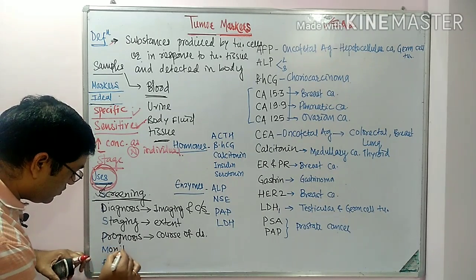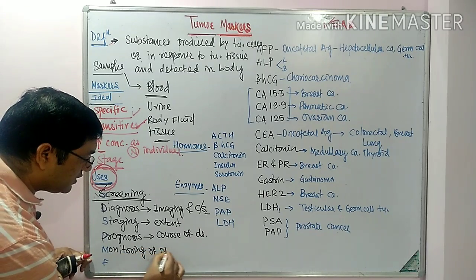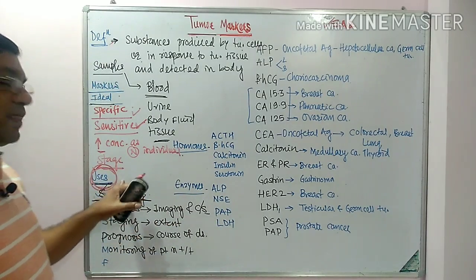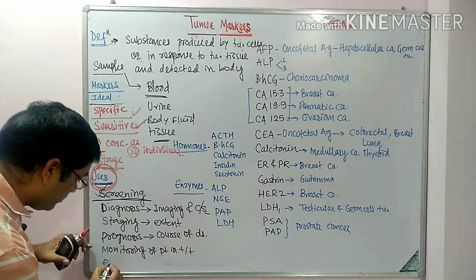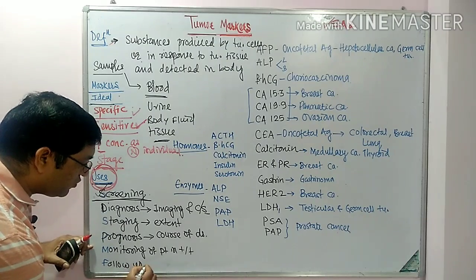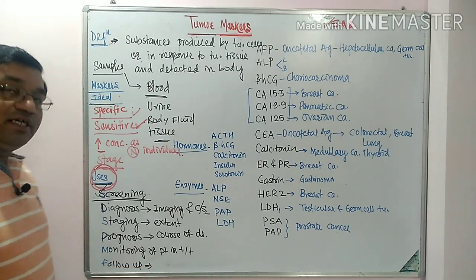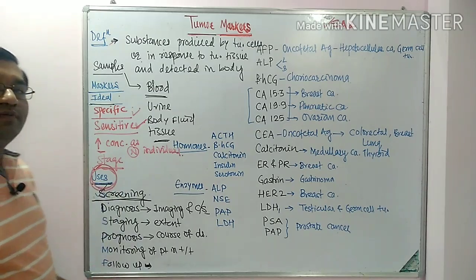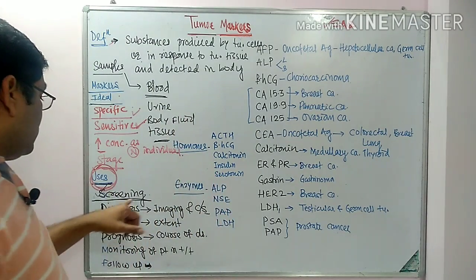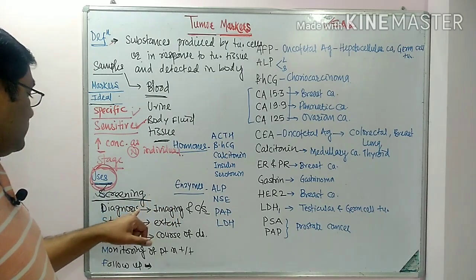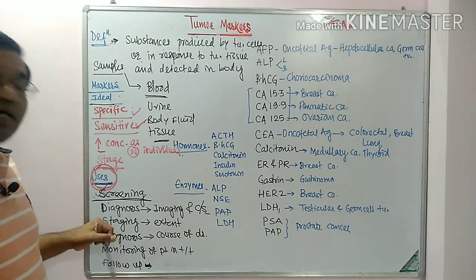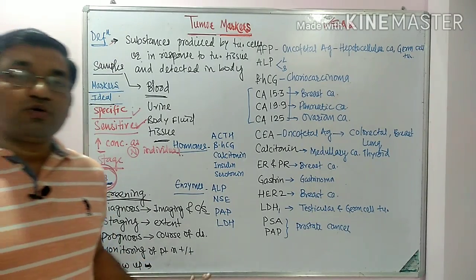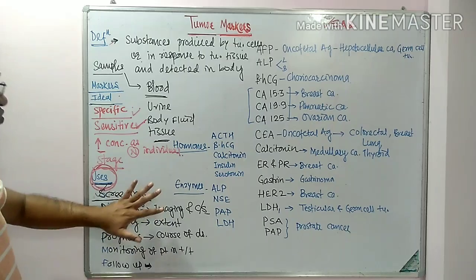The fifth use is monitoring — therapeutic monitoring of the patient can be done with the help of tumor markers. The sixth use is follow-up — once treatment is done, regular checkups are done for the follow-up of the patient, and tumor markers help in this. So tumor markers help in: screening, diagnosis and confirmation, staging, prognosis, monitoring during treatment, and regular follow-up of the patient.